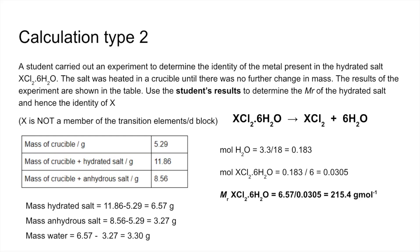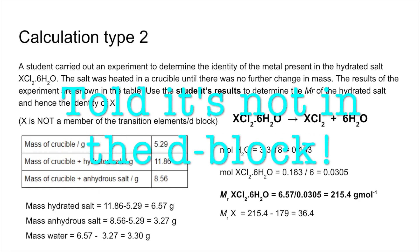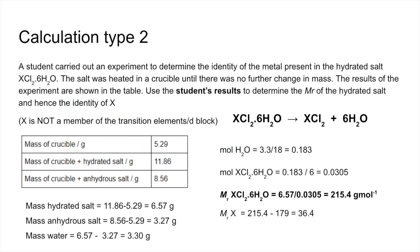To work out what the metal X is, we subtract from that MR the mass of 2 chlorines and 6 waters, so that comes out at 36.4. And finally, X, well, it's got to be in group 2 because it's XCl₂. Remember, each chloride ion has a 1- charge, so X has got to be 2+. And so therefore, calcium would be the closest match.